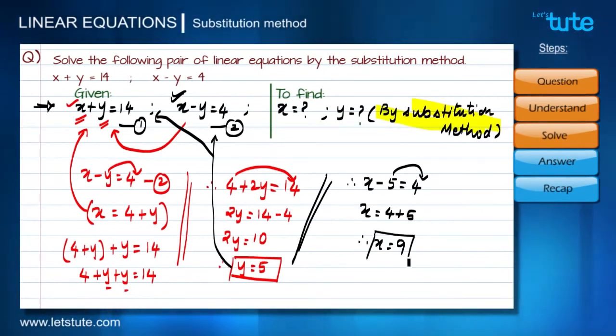I got value for x as 9. So according to the question I wanted the values for x and y. So in answer I get x equals to 9 and y equals to 5. So let's have a glance at the steps we have followed to solve this pair of linear equations.